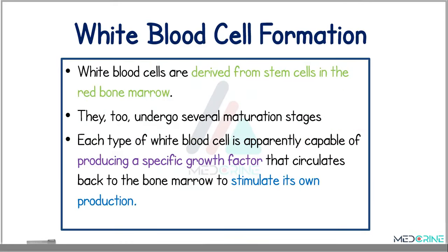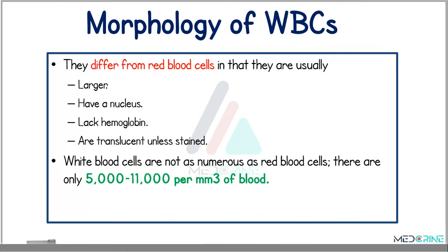Let's move ahead to a second type of blood cells: white blood cells. The white blood cells are derived from the stem cells in the red bone marrow. They too undergo several maturation stages, and each type of white blood cell is capable of producing a specific growth factor that circulates back to the bone marrow to stimulate its own production. White blood cells are larger than red blood cells, have a nucleus, lack hemoglobin, and are translucent unless stained. They number only about 5,000 to 11,000 per cubic millimeter of blood.